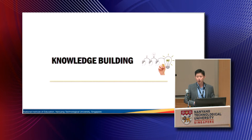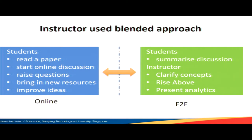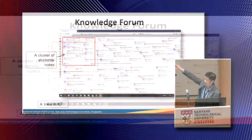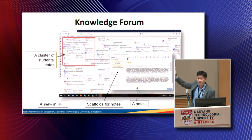The last example is related to knowledge building. We realized that many students do not participate actively in online discussion and are not prepared for class. So in my own class I used blended learning — I gave students online discussion tasks: read a paper, start an online discussion, raise questions, bring new resources, improve their ideas. In the face-to-face class, students would summarize the discussion, I would clarify concepts and present analytics to students. The platform I use is called Knowledge Forum. After rounds of discussion, you can track students' ideas through their notes. Very importantly, there are scaffolds for the posts — for example: 'my idea is,' 'my theory is,' 'new information is,' 'my theory cannot explain, a better theory is.' These scaffolds guide students to think in certain ways during discussion.